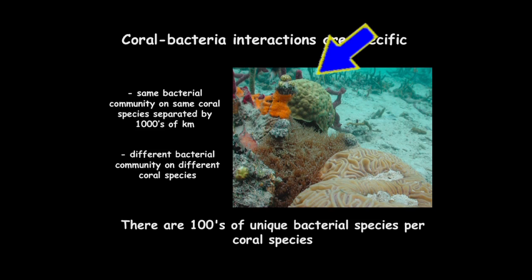Coral-bacteria interactions are specific — the same is true with people. You have specific microbes that are different from apes, for example. Corals are the same way. Even though they're sitting in water where you'd think a microbe could move from one to another, that's not true — this coral will have completely different microbes than that one right next to it, even when they're touching each other. Each coral will have hundreds of unique bacterial species on it, and most of the diversity on the reef is actually the microbes living on these different surfaces.